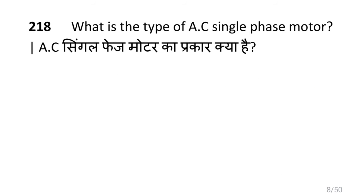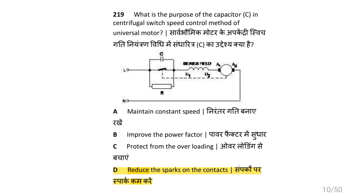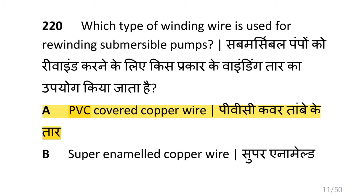What is the type of AC single phase motor? That is capacitor start, induction run motor. What is the purpose of capacitor C in the centrifugal switch speed control method of universal motor? That is to reduce the spark on the contacts.